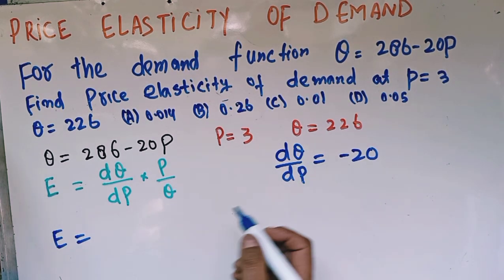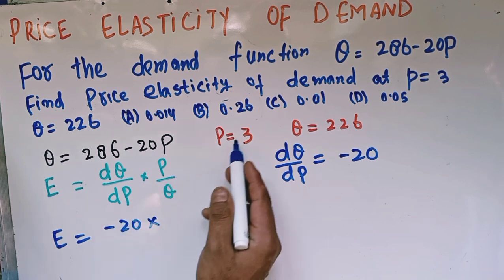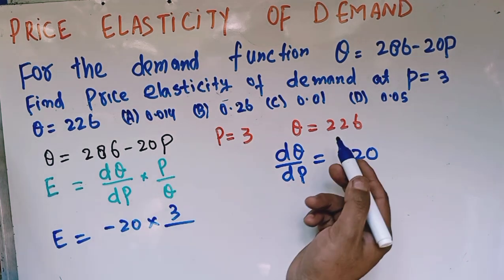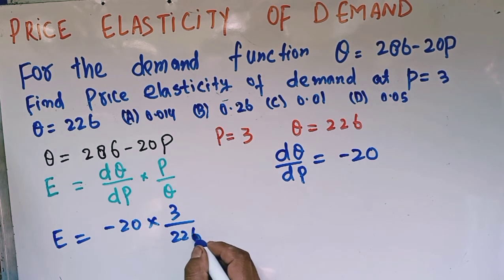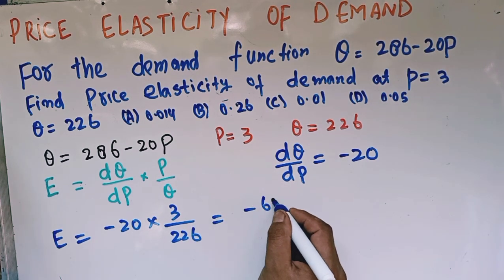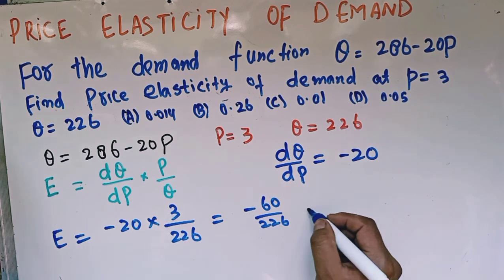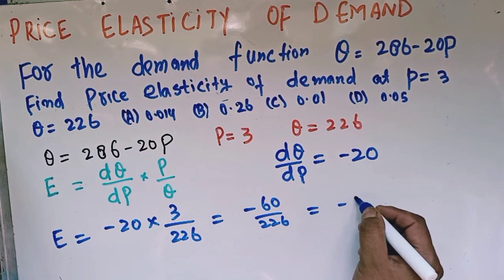dQ upon dP is minus 20, initial price is 3, and initial quantity is 226. This comes out to be minus 60 divided by 226, which equals minus 0.26.